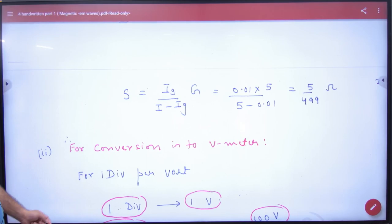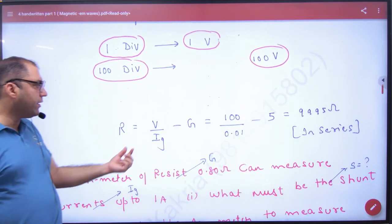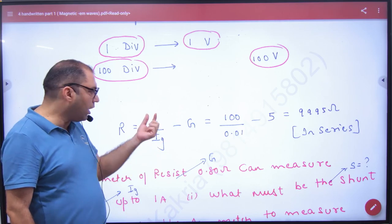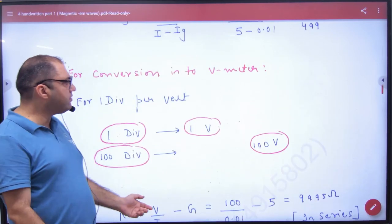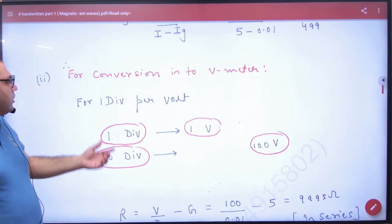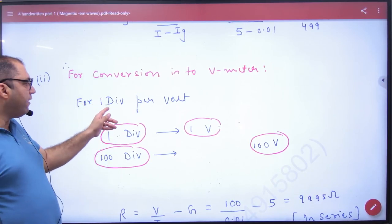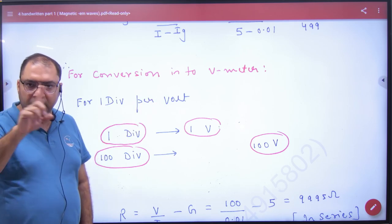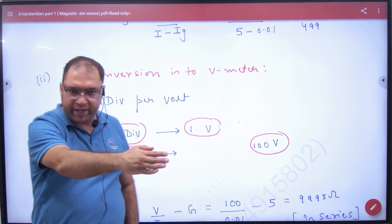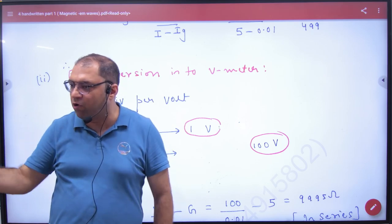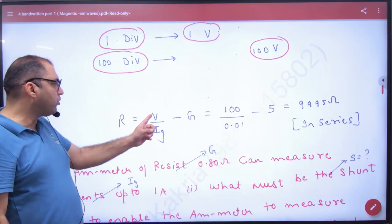If you want to make a voltmeter, apply the R formula to get the series resistance answer. Additionally, voltage sensitivity is 1 division per volt and there are 100 divisions, so 1 volt per division times 100 divisions gives 100 volts. Therefore, the voltmeter range is 100 volts, so V equals 100.